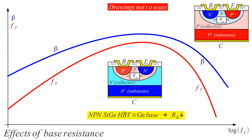A partial solution is to dope the base with germanium. Because of different thermoelectric contact voltages with the N-plus emitter, we can increase the doping of the base, reducing the base resistance — partially compensating the high-current degradation and enabling higher f_T. Similarly, carbon or diamond doping of the collector increases the breakdown voltage of the transistor.